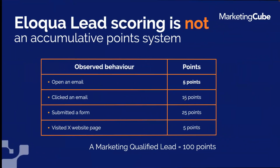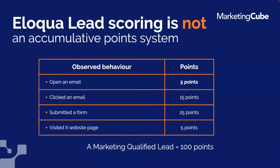What lead scoring is NOT: some systems let you assign points to behaviors — open an email, get five points; click an email, get 15 points. Not all platforms even allow website behavior. The downside is someone may have opened an email five months or two years ago — that doesn't really indicate engagement today. Recency becomes a really important part of the exercise, not just what they did but how recently they did it.